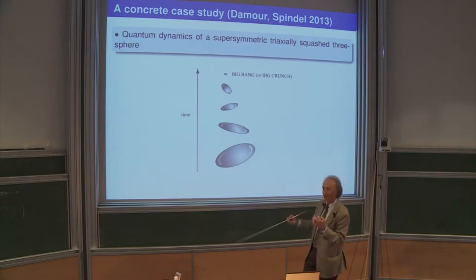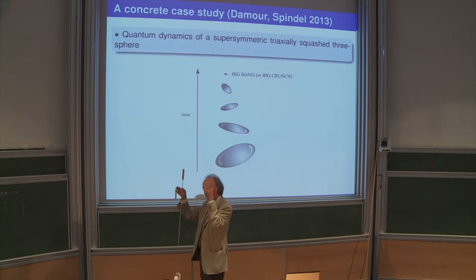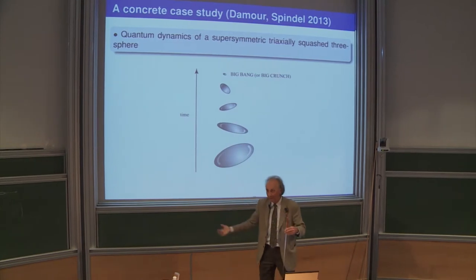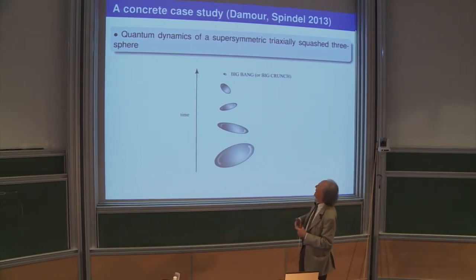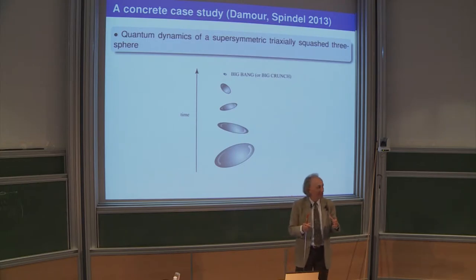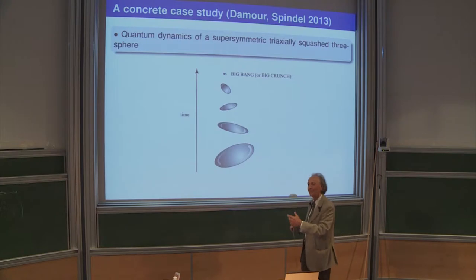We studied supergravity in our spacetime dimension — 3 space dimensions and 1 time dimension — and looked at a triaxially squashed 3-sphere. This is a cosmological model where the geometry of space is not a round 3-sphere but a deformed one, squashed in a way I will explain.